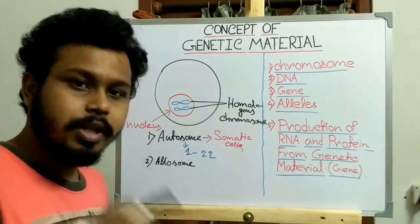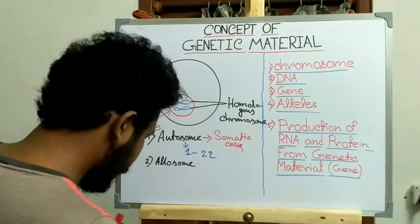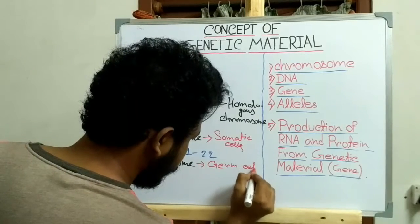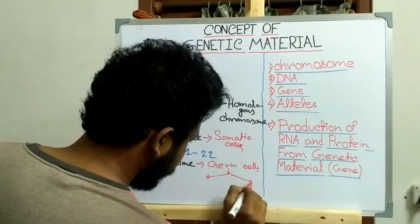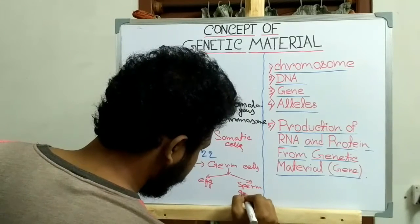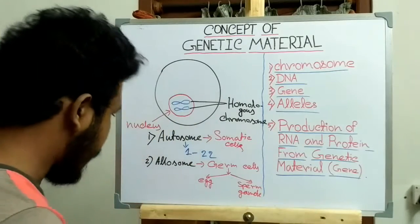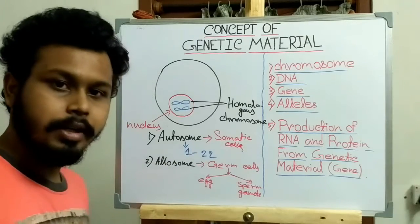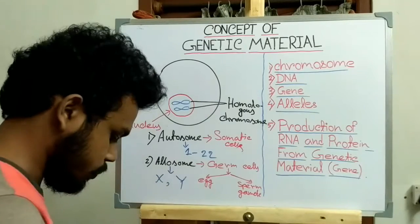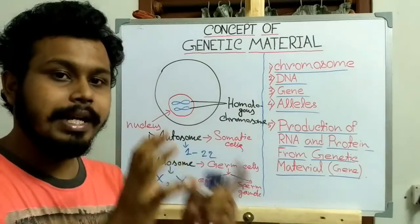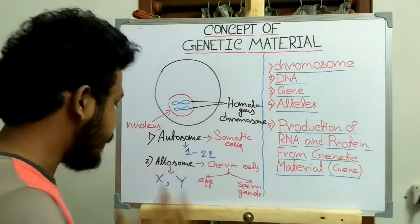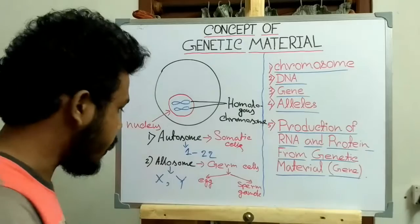The second type is the allosome, also called the sex chromosome. They are mainly present in the germ cells — that means the egg and the sperm gametes. These sex chromosomes contain two types: the X chromosome and the Y chromosome. In males there is one X chromosome and one Y chromosome, and in females there are two X chromosomes.